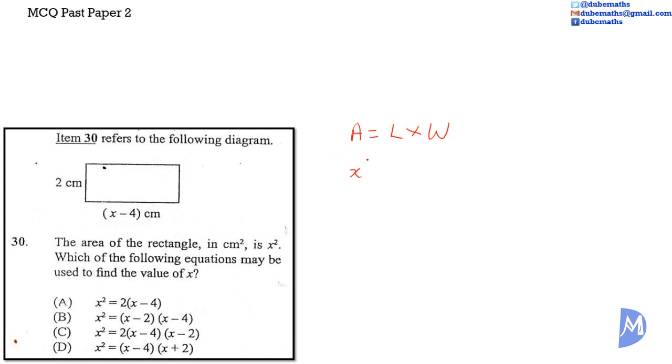Thus, x squared, the area of the rectangle, is equal to the length x minus 4 multiplied by the width, which is 2. Or simply, x squared is equal to 2 times (x minus 4). So the answer is A.